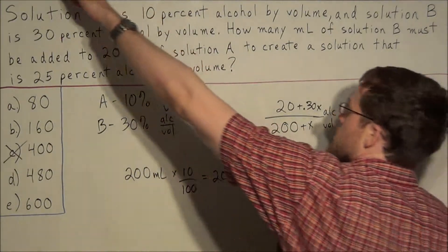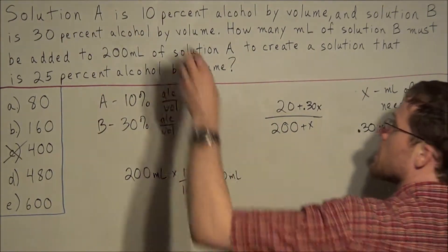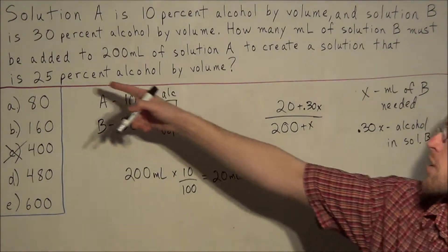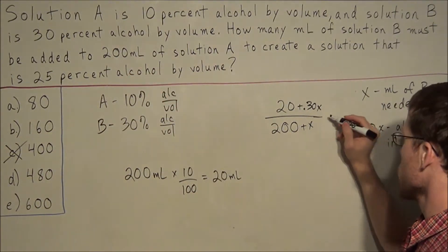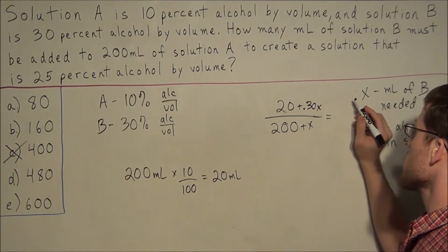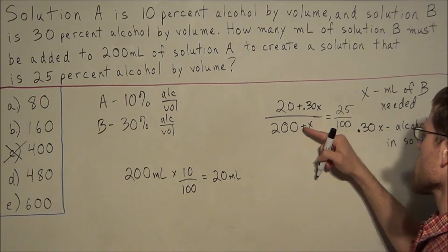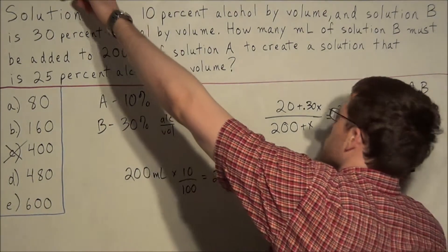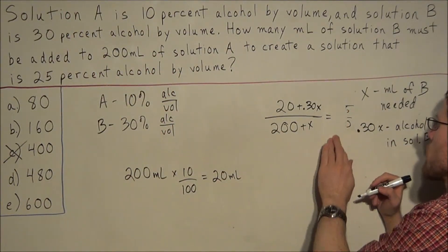But now what this tells us is that this new solution, the goal, is to add enough of this, milliliters of B, so that we have a 25% alcohol by volume final result. So if the final result needs to be 25% alcohol, we could set the left side equal to 25 over 100. And now we'll note that 25 over 100 will reduce to 1 over 4.